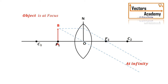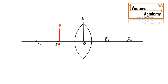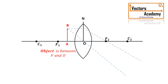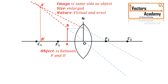If you move the object even closer — inside the focal length — the rays in fact diverge. We can extend the rays on the opposite side, that is on the same side as the object, and the image formed will be on the same side as the object. Hence the image is virtual, enlarged, and erect. This concludes the convex lens.